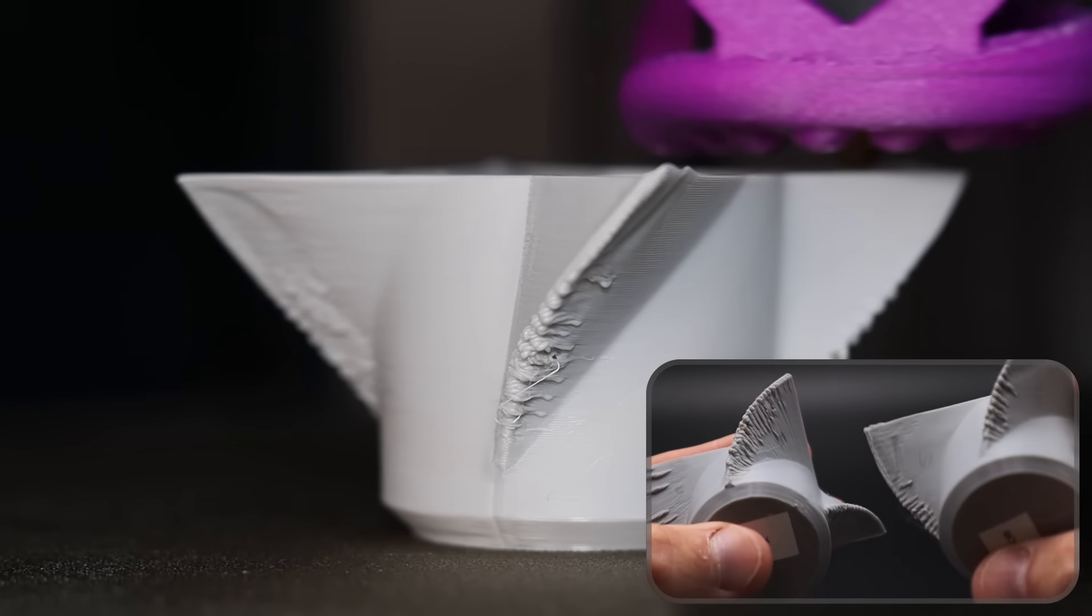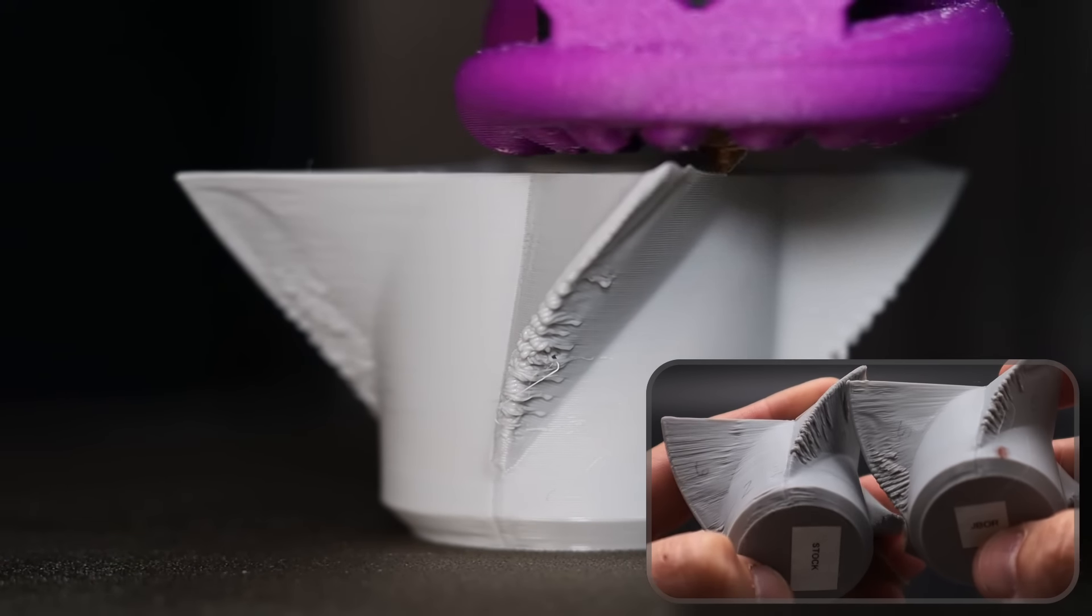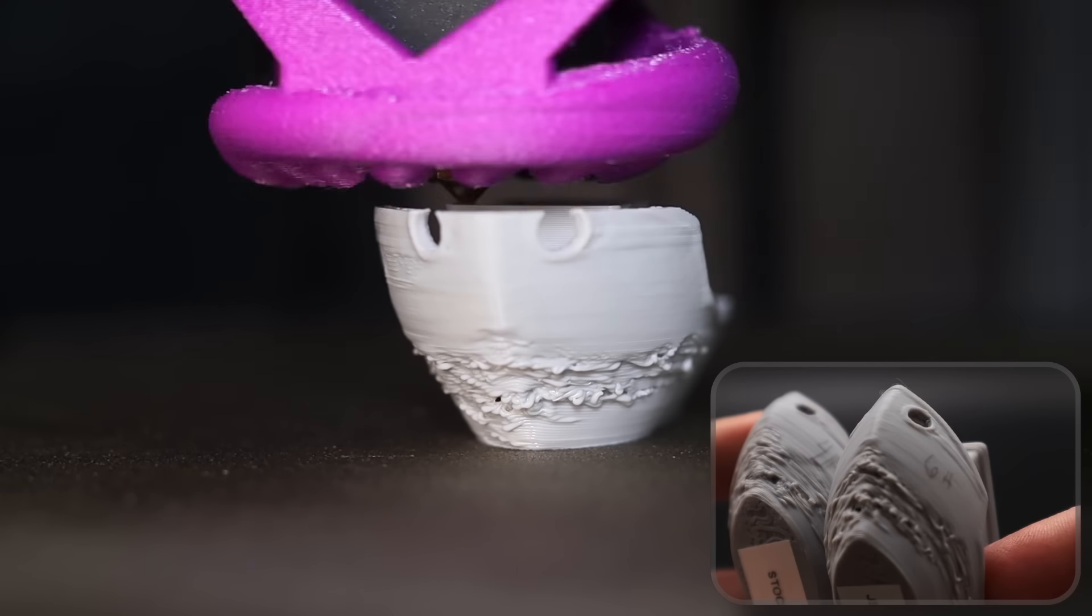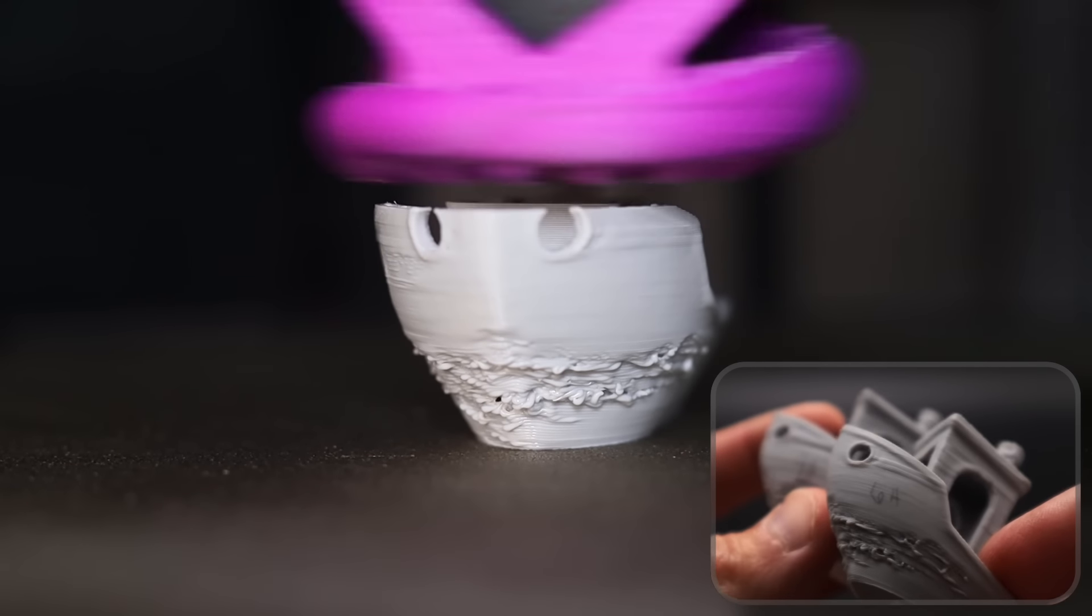For the shuriken, three of the four sides are better than the stock duct and the shaft is also better, overall better than stock. For the benchy, the hull was better, the bridges were a little bit better and the chimney was also better, overall again better than stock.